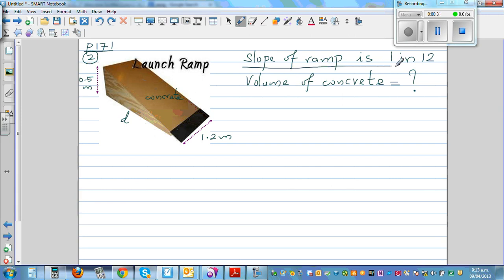The slope of the ramp is 1 in 12. What does that mean? This means that for every 12 meters length, the ramp rises by 1 meter.